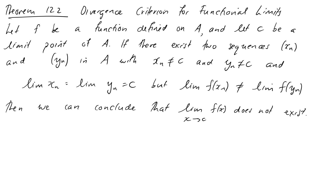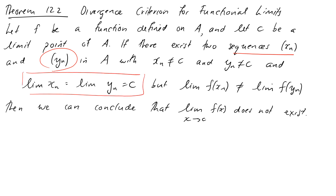There's one other thing to discuss: the divergence criterion for functional limits. It's really a corollary to our definition. What it says is: let f be a function defined on some domain A and let c be a limit point. If we can find two different sequences x_n and y_n that both converge to the same limit c but their function values converge to different values, then the limit does not exist. This gives a straightforward way to show that a limit doesn't exist.